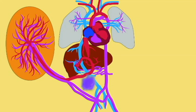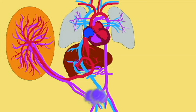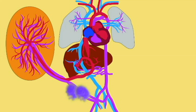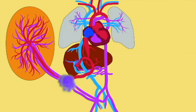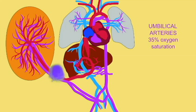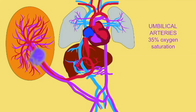In the hip region, two arteries branch from the internal iliac arteries and pass through the navel to form the umbilical arteries, passing through the umbilical cord to reach the placenta.